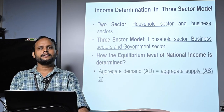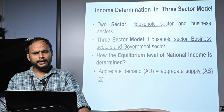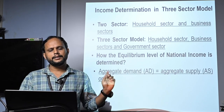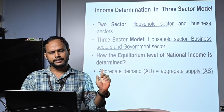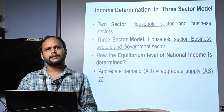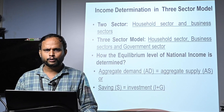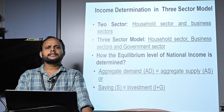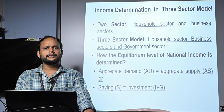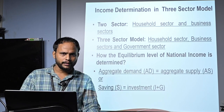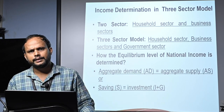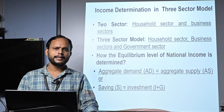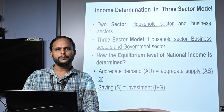The first requirement is that aggregate demand should be equal to aggregate supply. The second condition is that savings should be equal to investment. So in a Keynesian three-sector macroeconomic model, in order to determine the equilibrium level of national income, there should be equality between aggregate demand as well as aggregate supply.